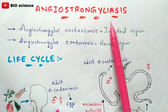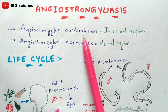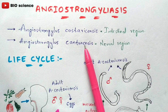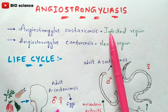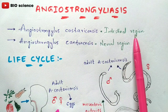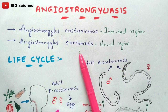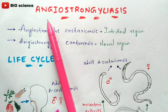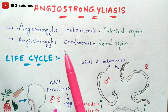Now let us discuss the life cycle of Angiostrongylus costaricensis. This parasite results in damage to the intestinal region, while Angiostrongylus cantonensis causes damage to the neural region — the central nervous system. If A. costaricensis causes damage to the intestinal region, the disease is called intestinal angiostrongyliasis; if A. cantonensis damages the neural region, it is called neural angiostrongyliasis.